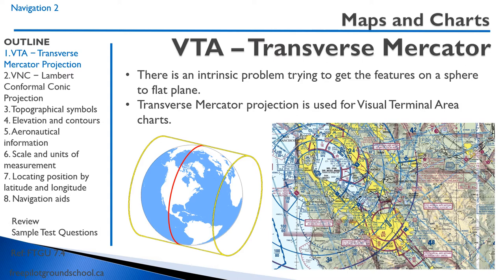One issue with Transverse Mercator is that it distorts things at the poles. For example, Greenland often appears the same size as Australia on a world map, whereas in actual fact Greenland is much smaller than Australia in land mass. However, this projection works well for visual terminal area charts, which cover quite a small area, and in a VTA all the meridians of longitude end up being parallel — which is an advantage.